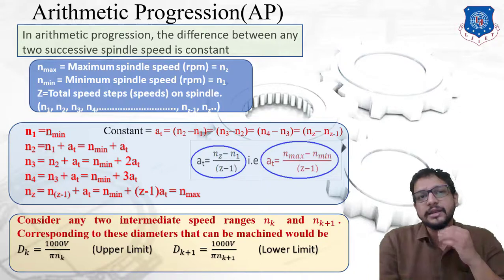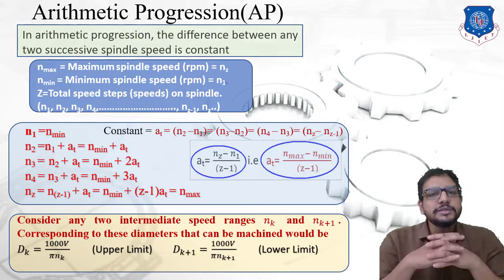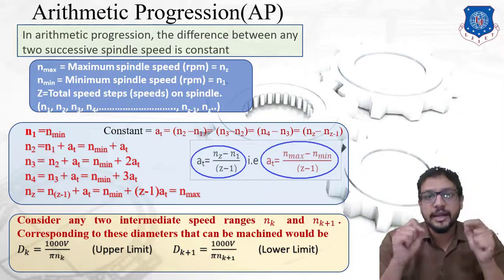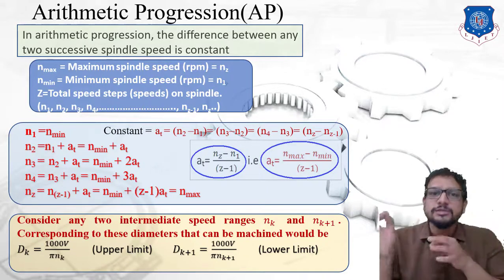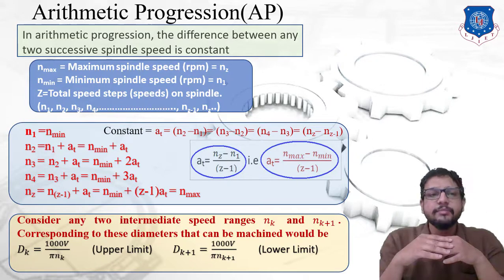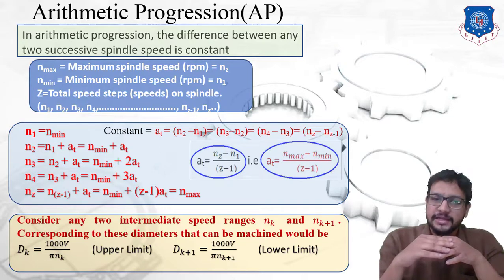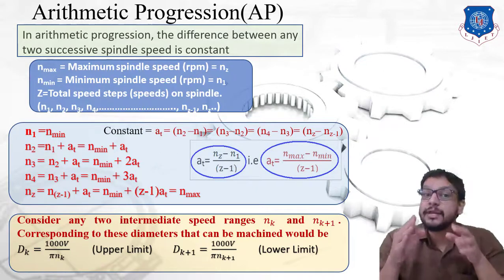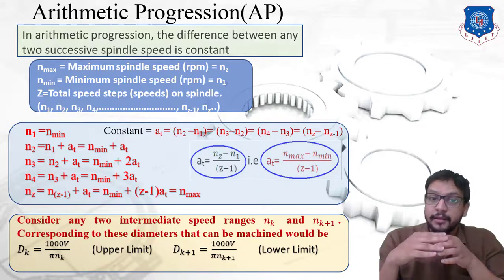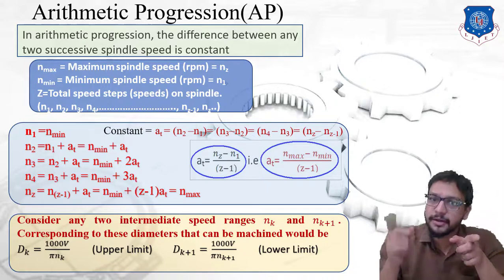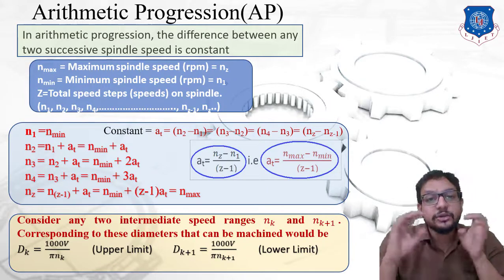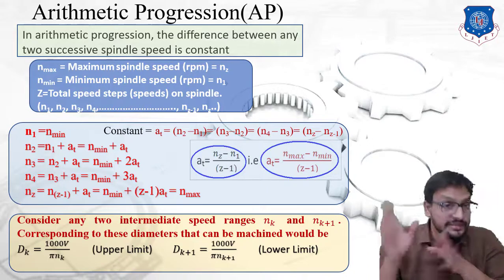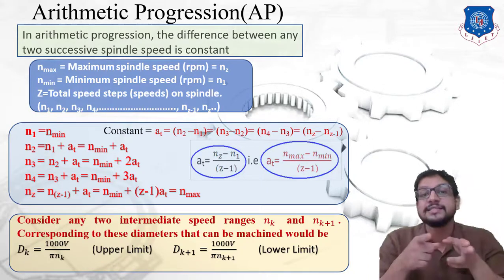Let's begin with arithmetic progression. In arithmetic progression, the difference between any two successive spindle speeds remains constant. Here, n_max is the maximum spindle speed in rpm, denoted by nz — so for a six speed gearbox, n_max equals n6. n_min is the minimum spindle speed, equal to n1. The variable z indicates the total number of spindle speed steps: z equals 6 for a six speed gearbox, z equals 8 for an eight speed gearbox.